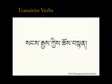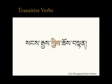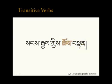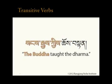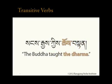Let's look at some examples. 'Sangs rgyas kyis chos bstan.' The agent, Sangs rgyas (Buddha), is marked by kyi, the agentive particle. Notice that the particle is spelled kaya takya ki gu ki s ki because the last syllable in Sangs rgyas has a sa suffix. The verb here is bstan, meaning 'taught,' and the object is chos, meaning 'dharma.' So we get: the Buddha taught the dharma.